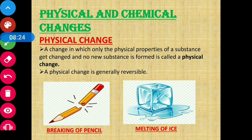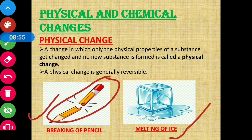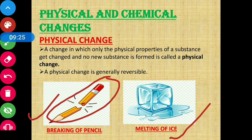Examples of physical changes: breaking of a pencil — when a pencil breaks, its size becomes smaller but no new substance is formed, so breaking of a pencil is a physical change. Similarly, melting of ice — ice is made up of water; when it melts it converts to liquid water. The substance is water in both cases — no new substance is formed, only the physical state changes from solid to liquid. Therefore melting of ice is also an example of a physical change.